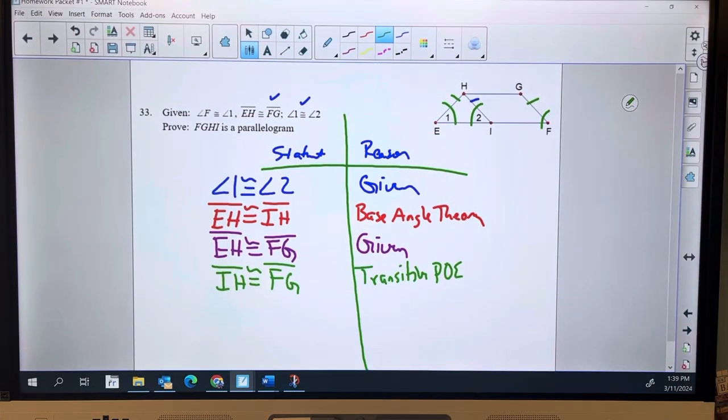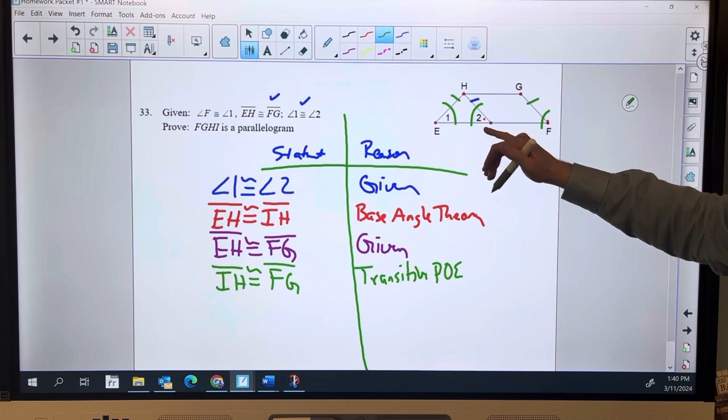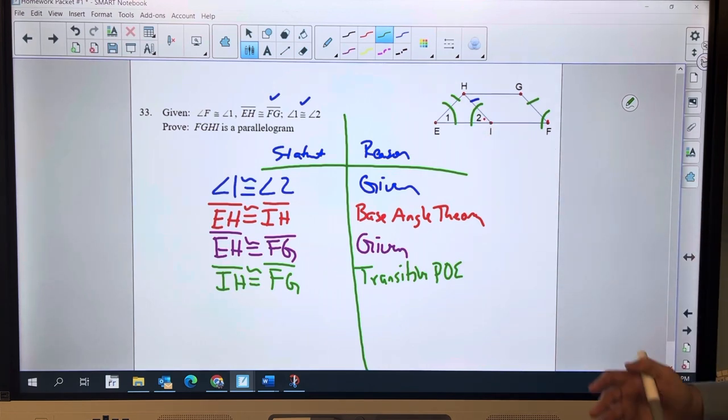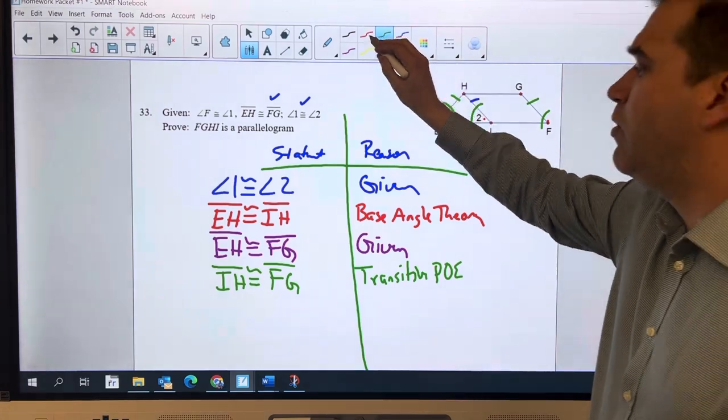So now I've got the opposite sides are congruent. Now I need them to be parallel. They're parallel because angle F is congruent to angle 2. Now, obviously, my given is that angle F is congruent to angle 1, so let's start there.